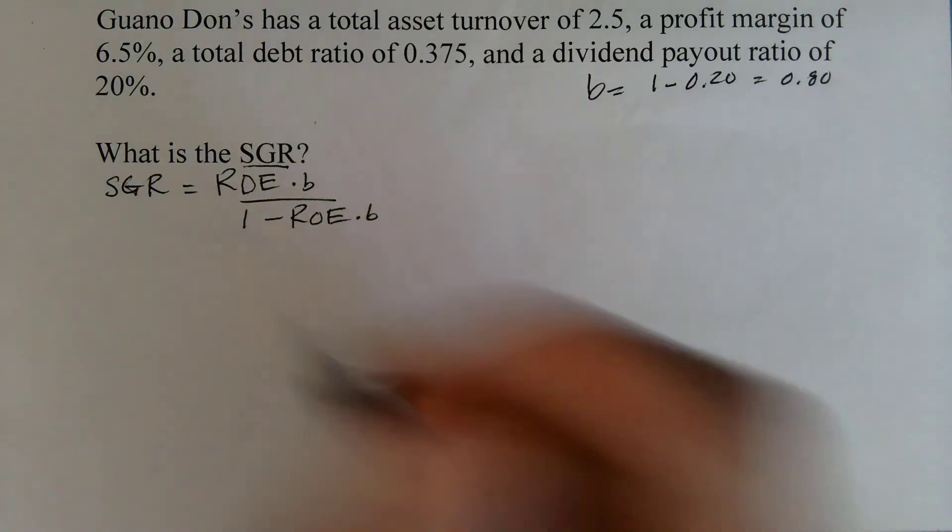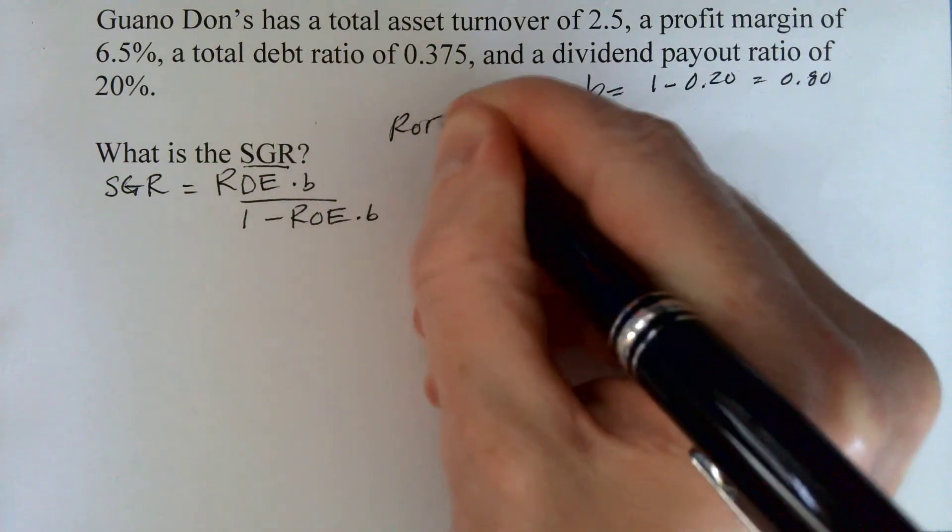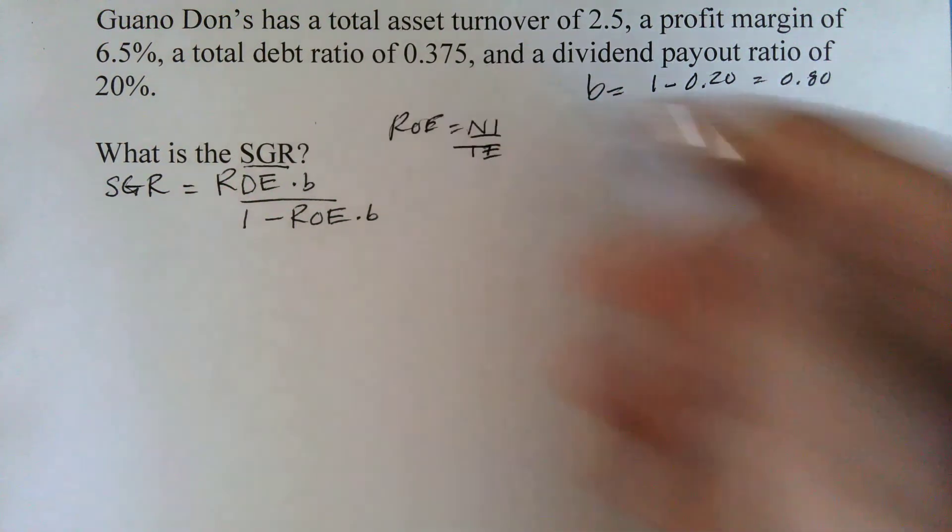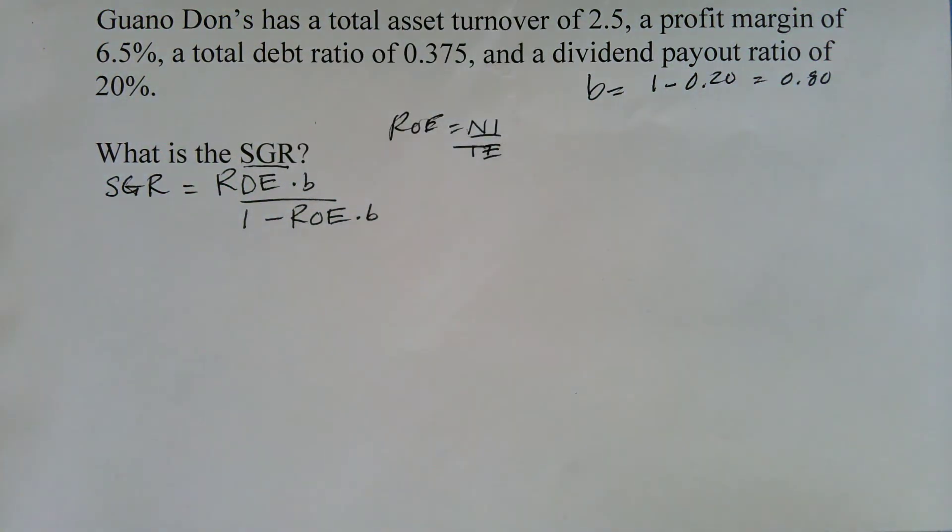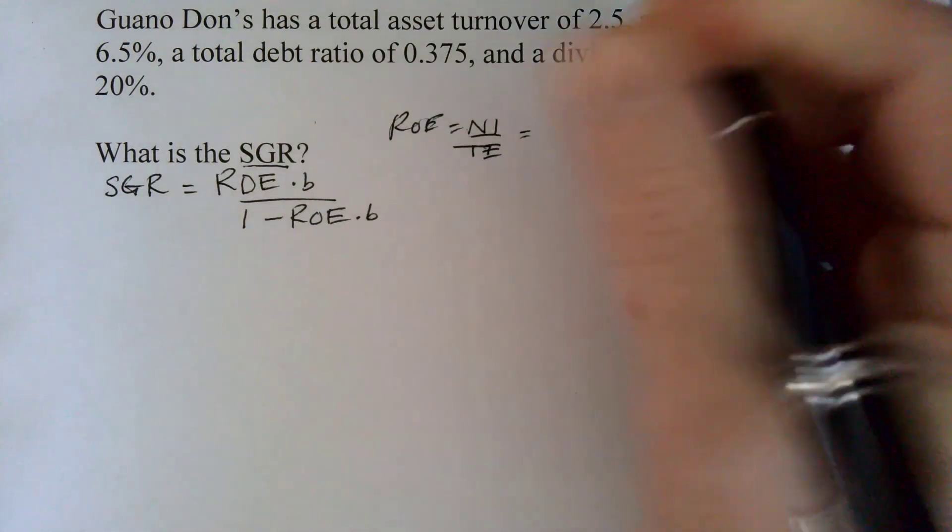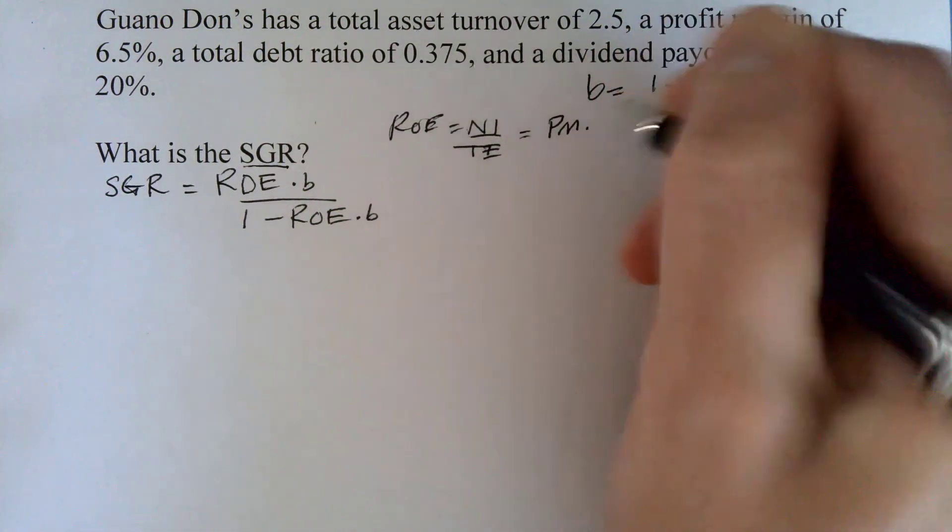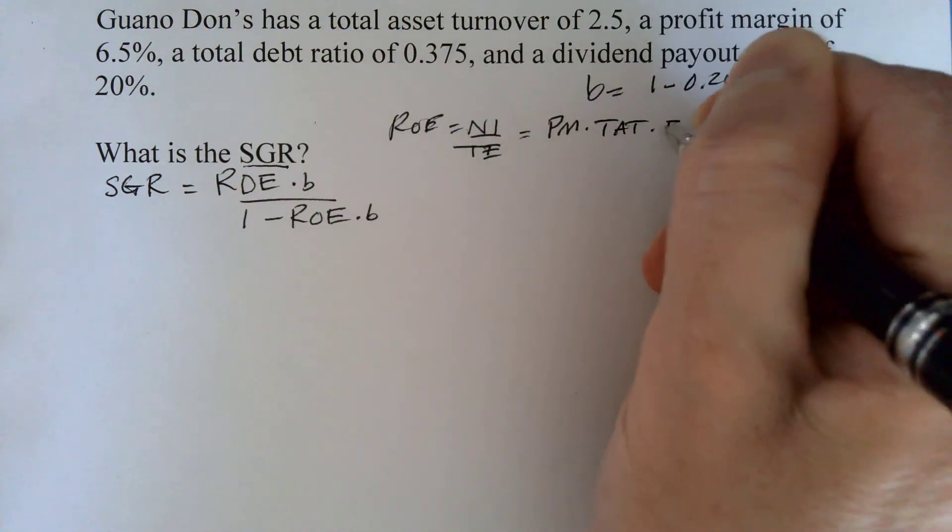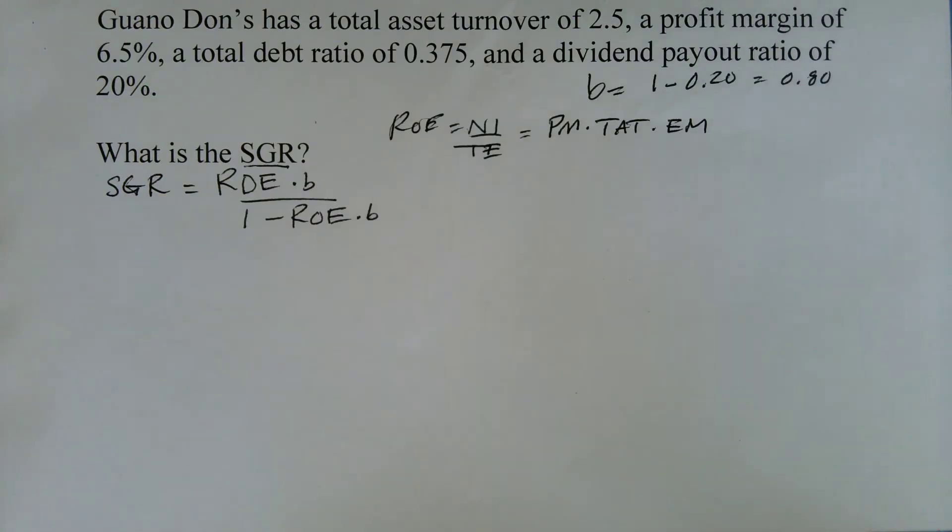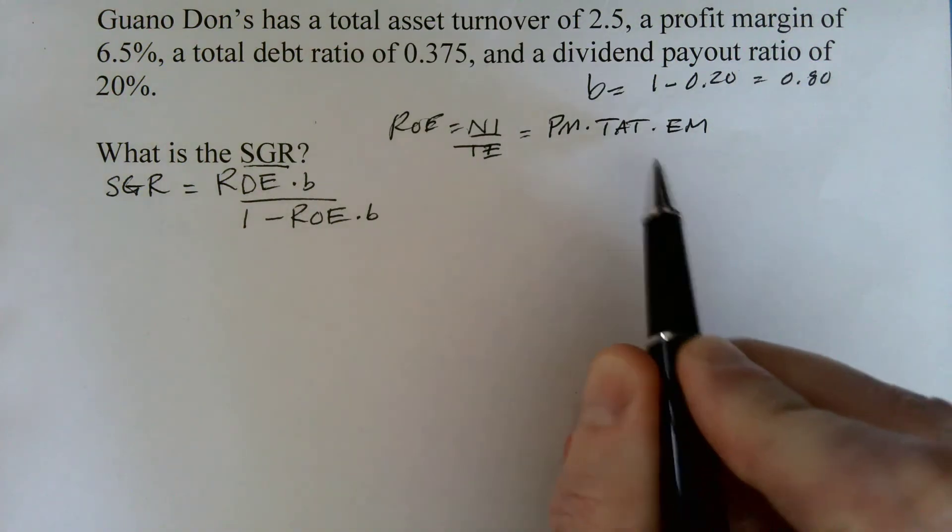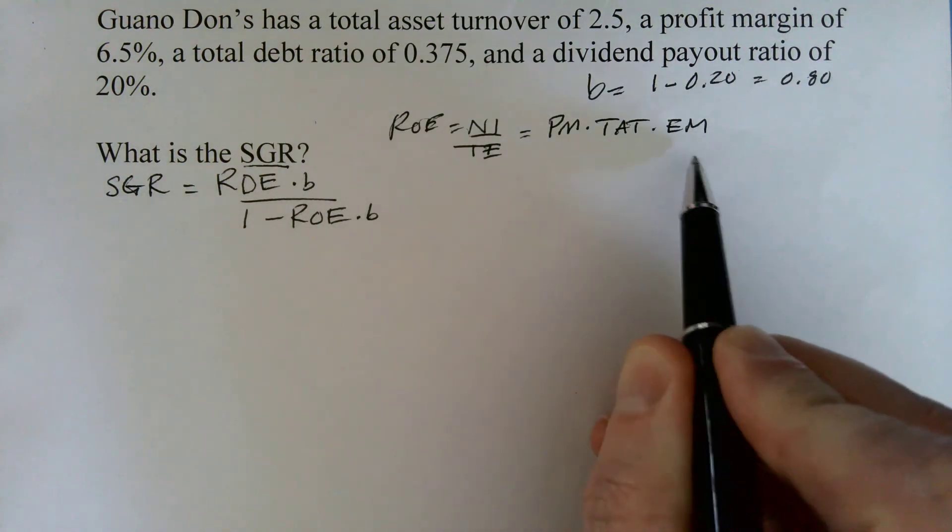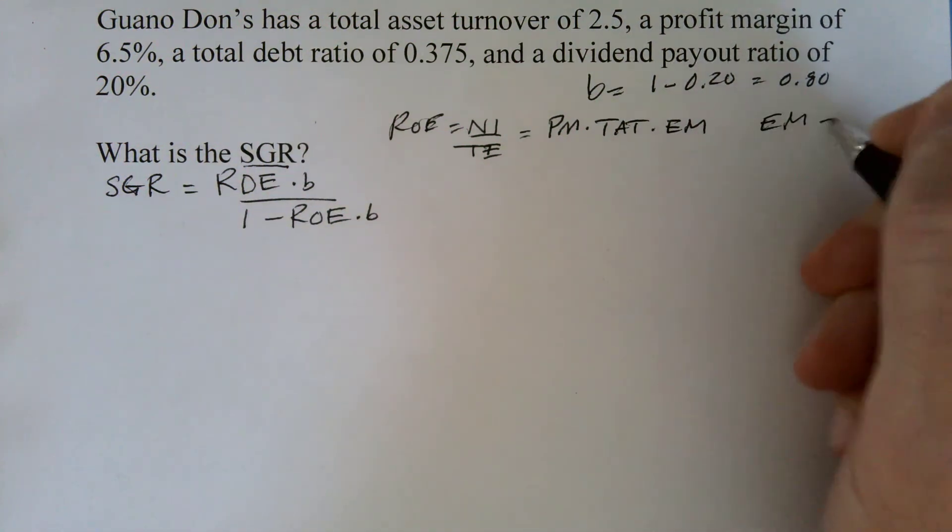And so all we need to do is figure out ROE. Well, ROE, typically we would say, is net income over total equity. But once again, neither of those pieces of information have been given to us. But we do have some other information. We can use the DuPont identity. We've been given this piece of information. And we've been given this piece of information. So all we need is the equity multiplier. Well, the equity multiplier is total assets over total equity.